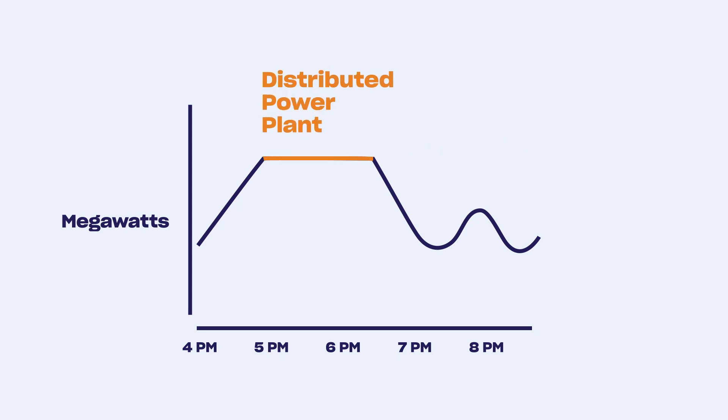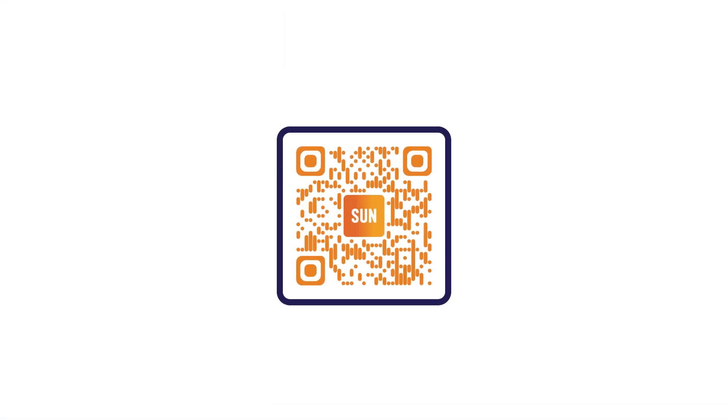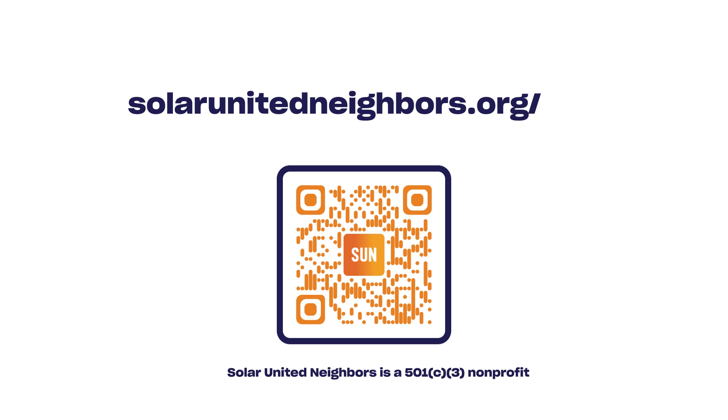That's why Solar United Neighbors is fighting to make sure these programs are fair, accessible, and available to everyone. If you already have solar batteries or smart appliances, visit solarunitedneighbors.org/DPP to see if there's a program in your area. Or email us to help bring one to your community. Join us and help build a better grid today.